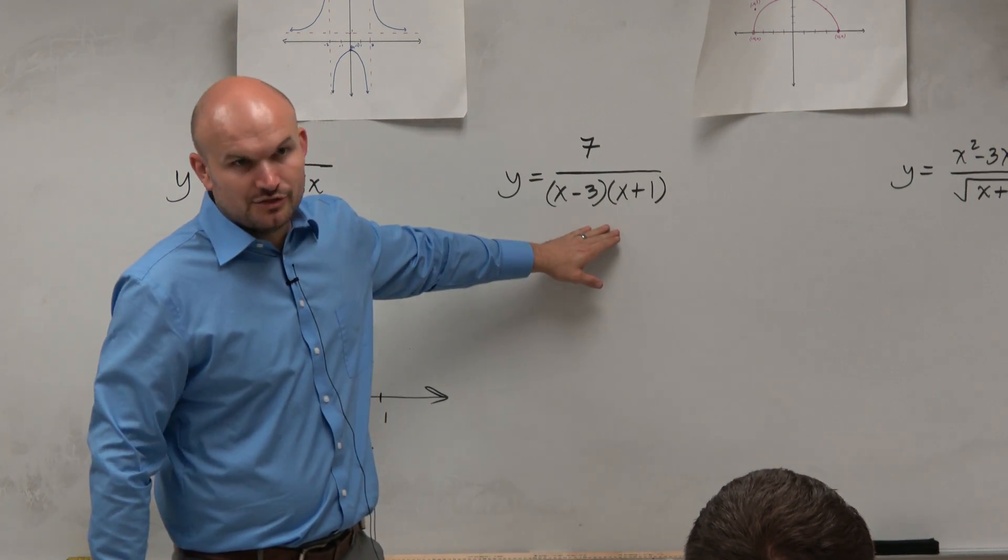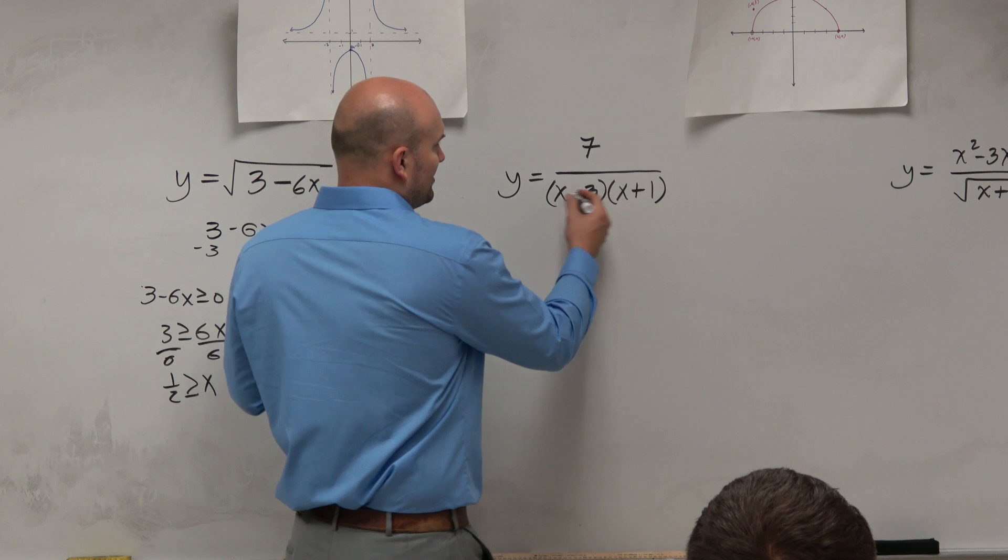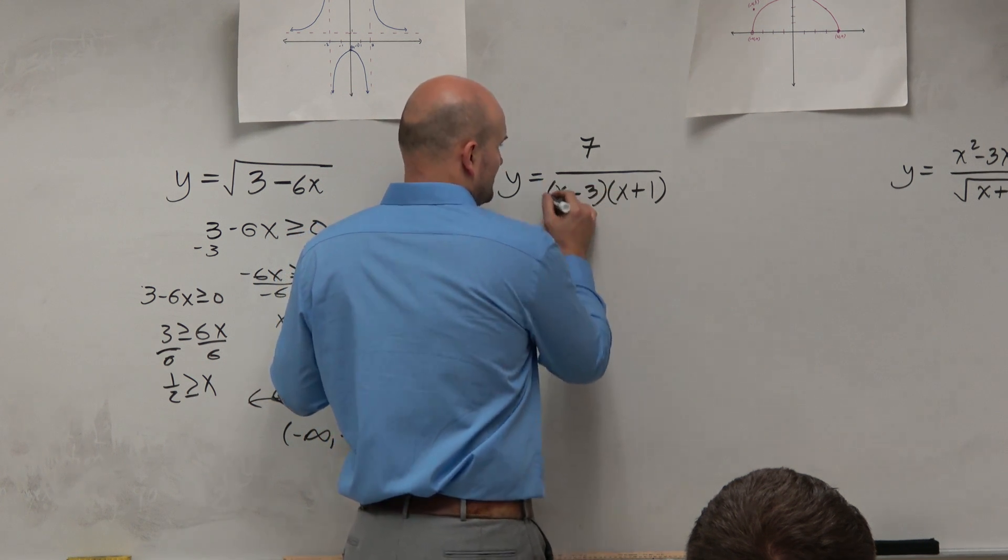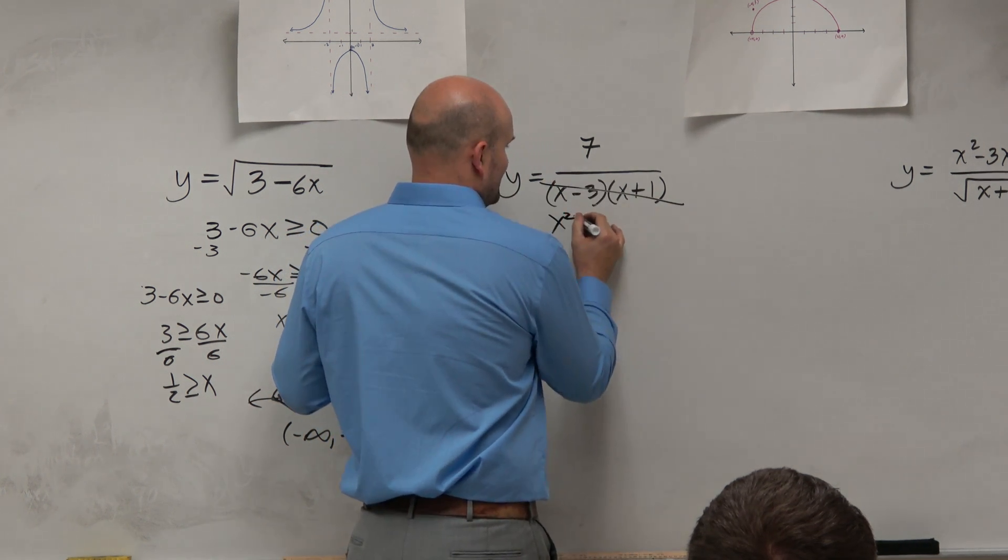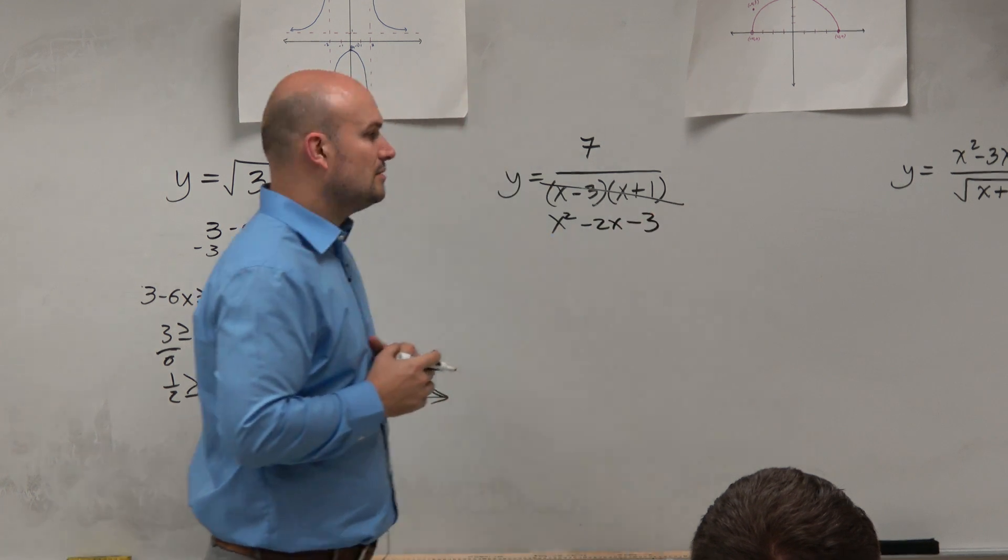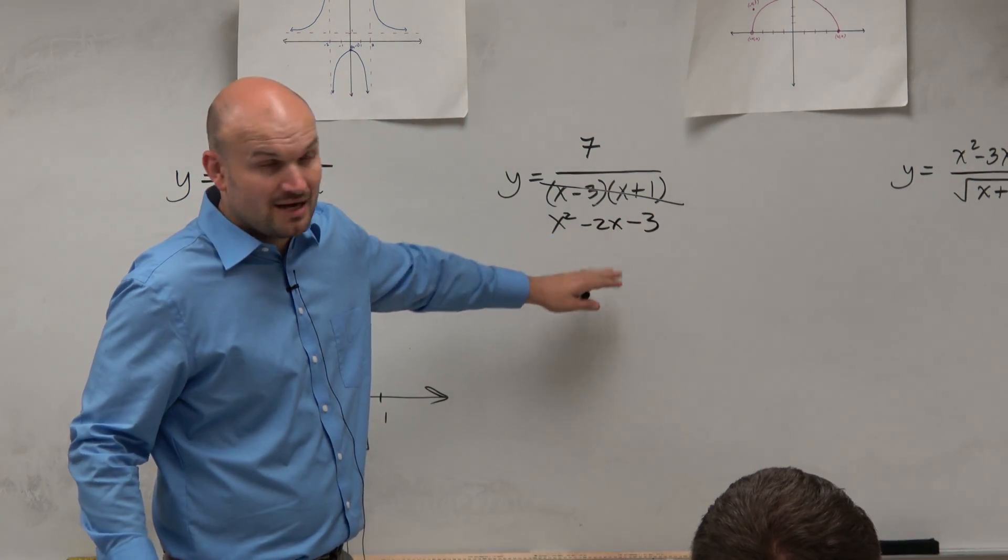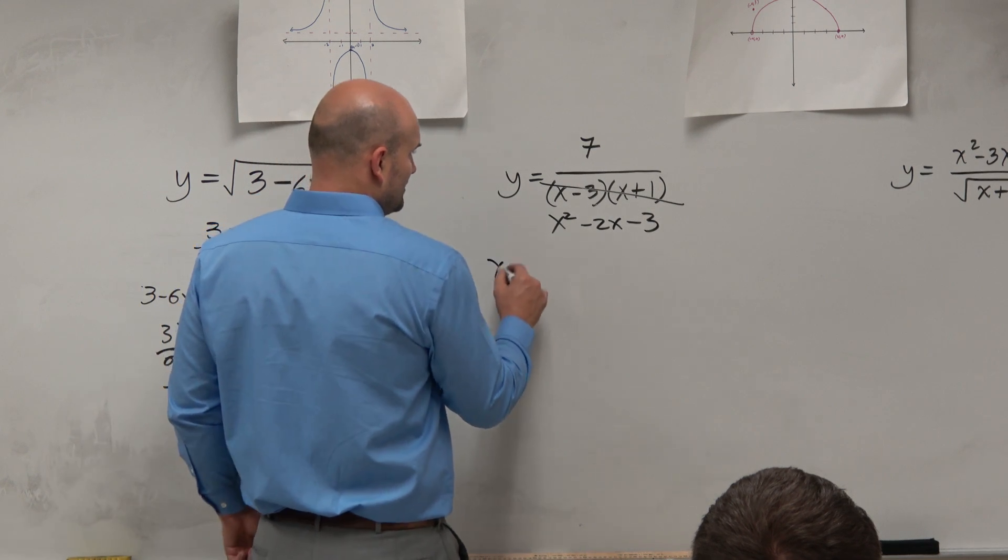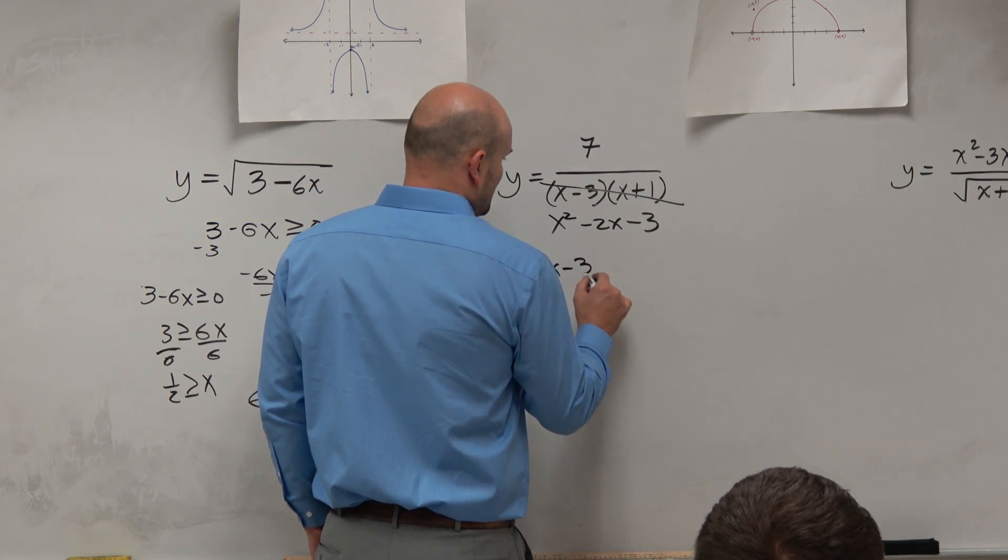Now, this one's easy to do in your head, right? But I just want to remind you, if it looked like this, that's what it would be multiplied out, you want to set the denominator equal to 0.